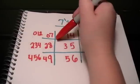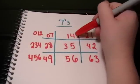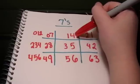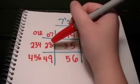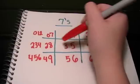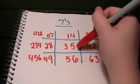One times seven is seven, two times seven is 14, three times seven is 21, four times seven is 28, five times seven is 35,